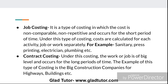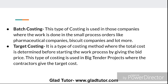The second type of costing is contract costing. Under this costing, the work or job is of a big level and occurs for a long period of time. The examples of this costing are big construction companies building highways and bridges. These projects are not completed in ten days — they go on for a long time. So companies use contract costing for such projects.